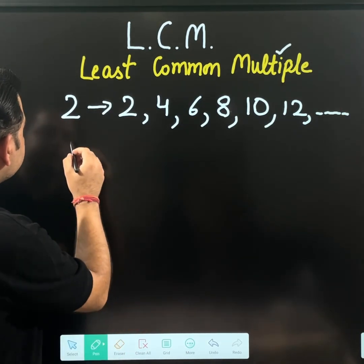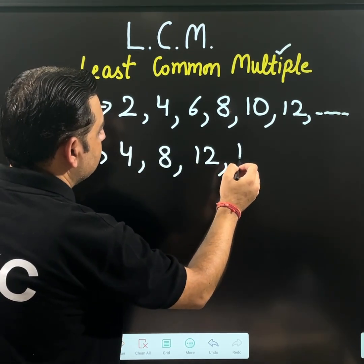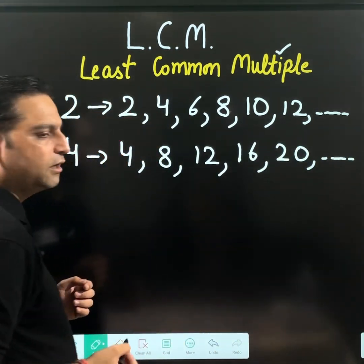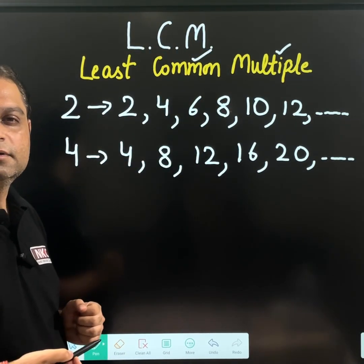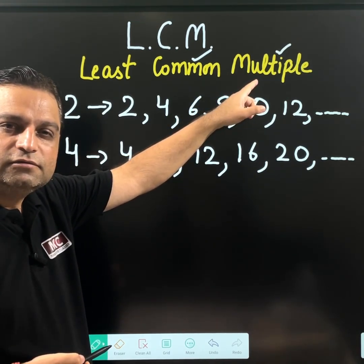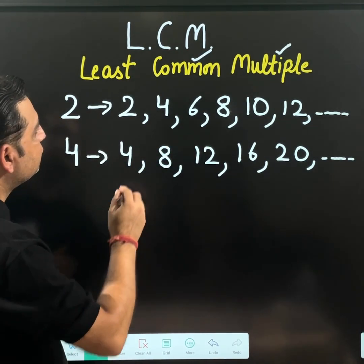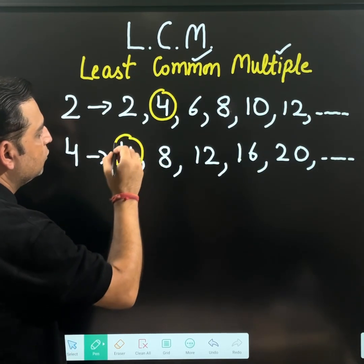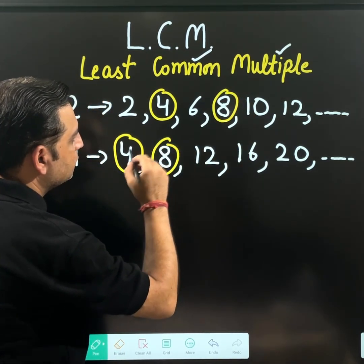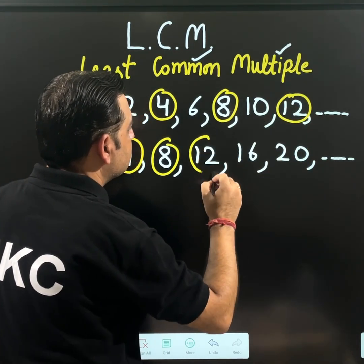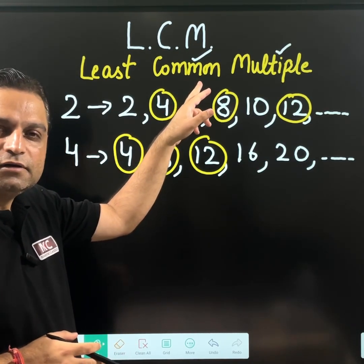At the same time, if I tell you to write the multiples of four, it will be 4, 8, 12, 16, 20, and so on. So the meaning of multiple is clear. Now the second word is 'common' — that means all those multiples which are common in these two. I am going to encircle them: 4 is common, meaning it comes in both. Then 8 is also common, then 12 is also common, and so on. So the meaning of common is clear — it is the value coming in both.